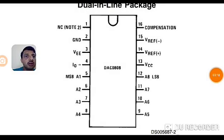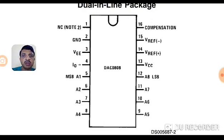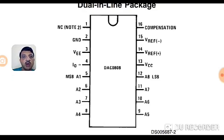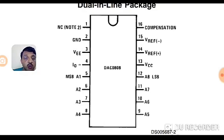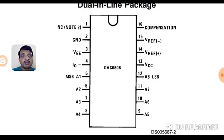Looking at the DIP package of the DAC 0808, it is a 16-pin chip. It consists of digital inputs from LSB to MSB and gives an analog output in the form of current I0 at pin number 4. It accepts supply voltage VCC at pin 13 and VEE at pin 2. It needs a dual supply — VCC can be 5 volts, and VEE should be in the range of minus 9 to minus 10 volts.